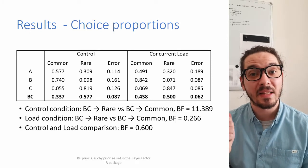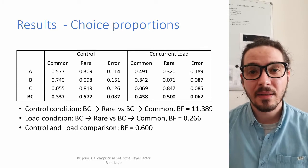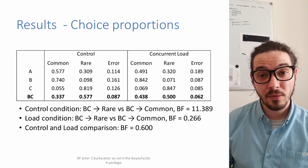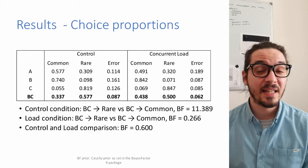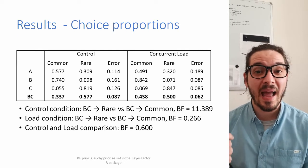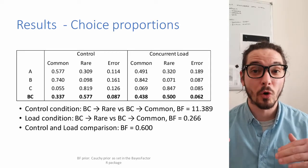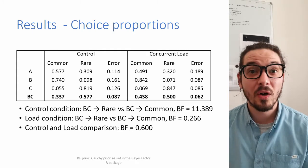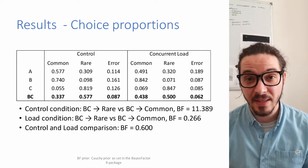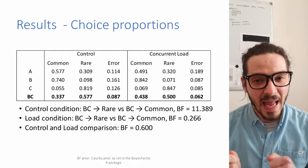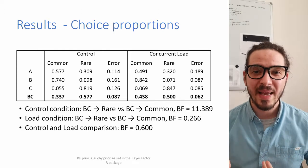For the main stimulus of interest, B-C shows a systematic rare preference in the control condition which, as indicated by the Bayes factor, is very reliable — so we observed the inverse base rate effect in the control condition. Moving to the concurrent load condition, there appears to be a rare preference, but the Bayes factor indicates clear evidence for the null — meaning participants' responses were close to chance.